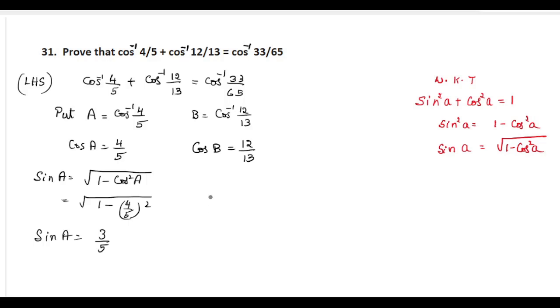Now to find sin B, you can apply the same formula again. So sin B equal to root of 1 minus cos square B. So root of 1 minus cos B is 12 by 13, so 12 by 13 the whole square. So sin B equal to 5 by 13.